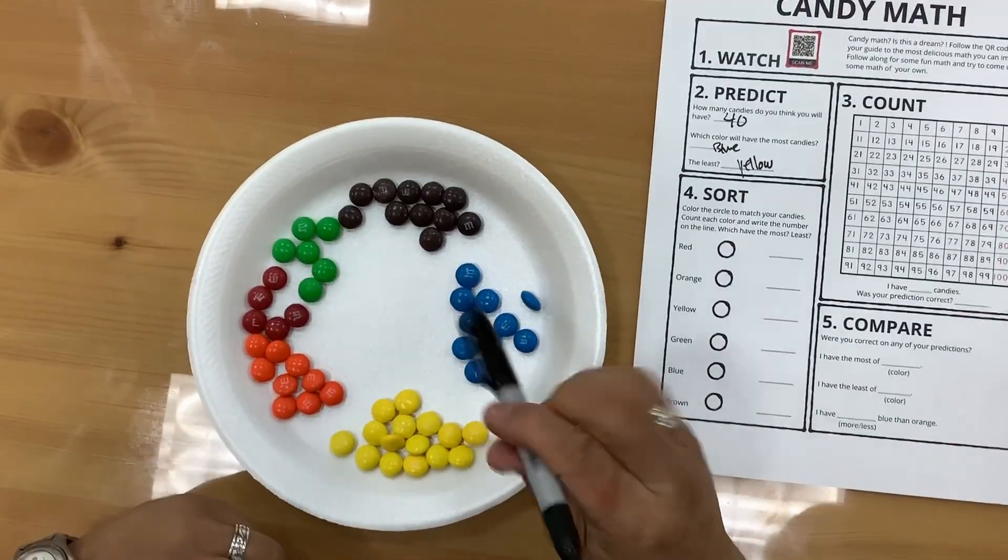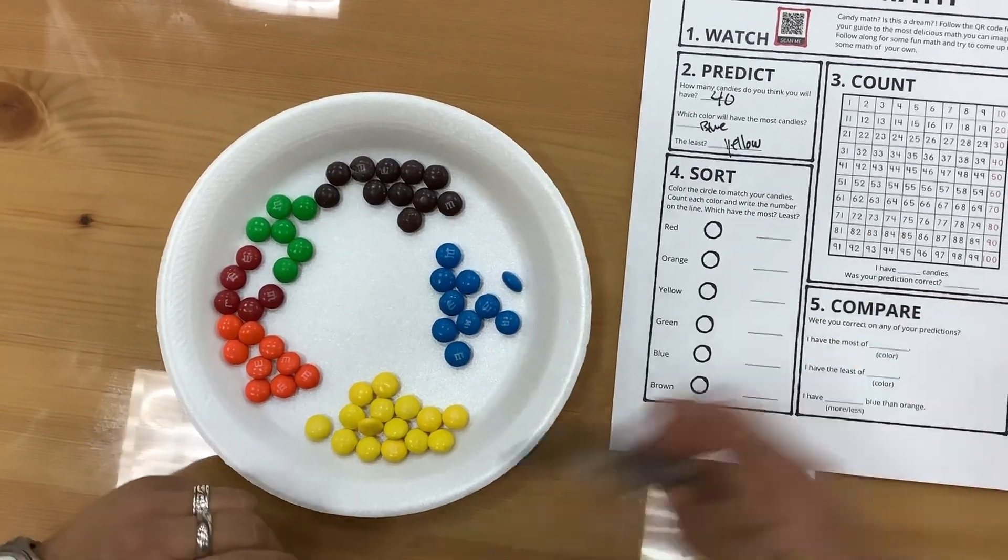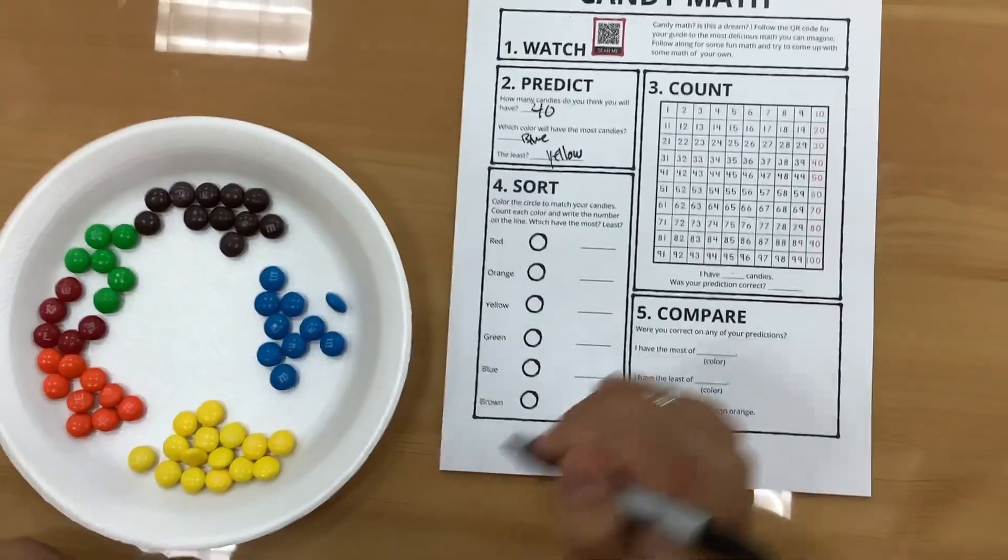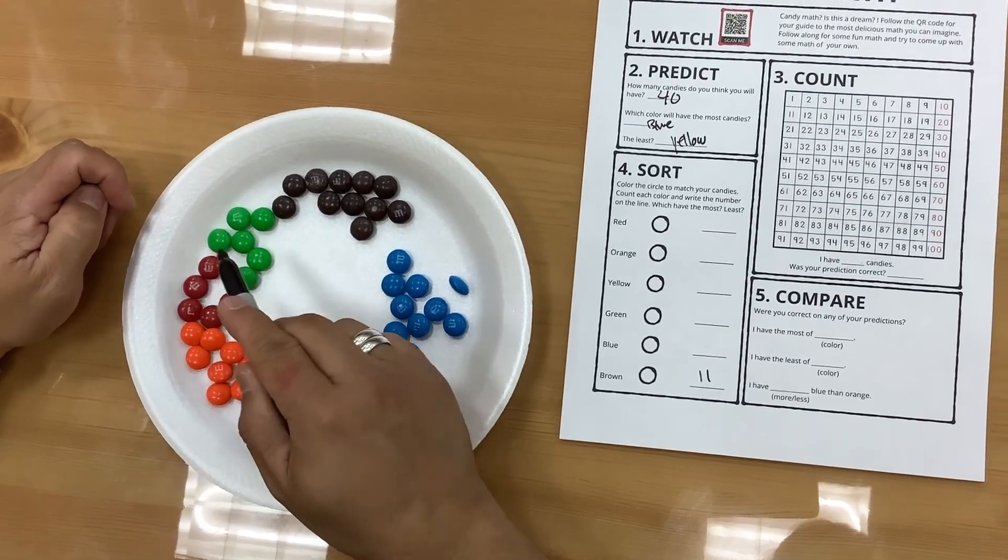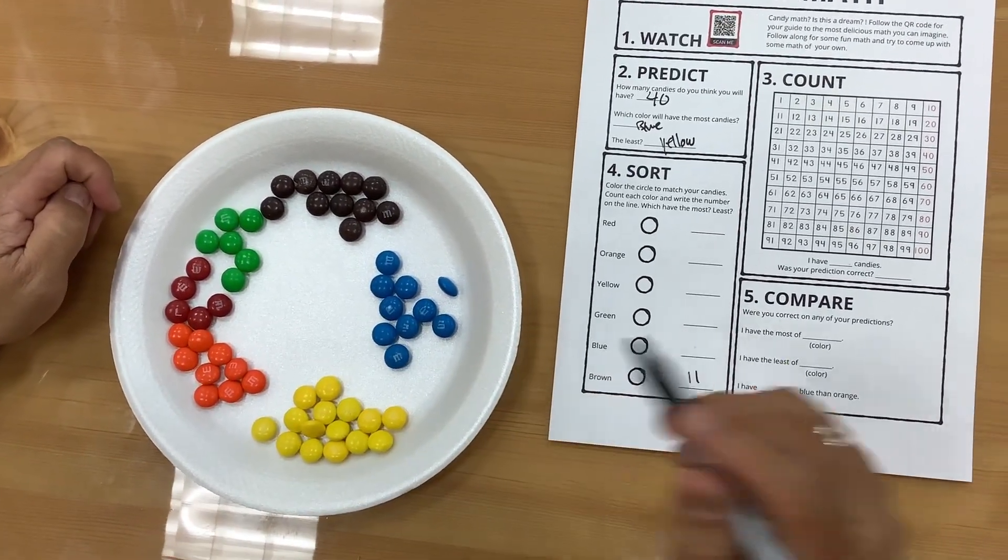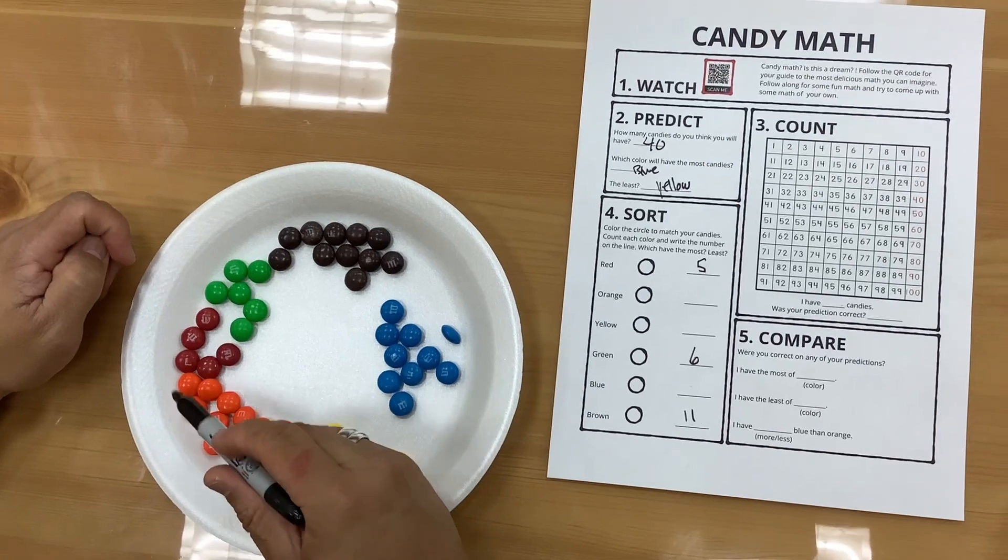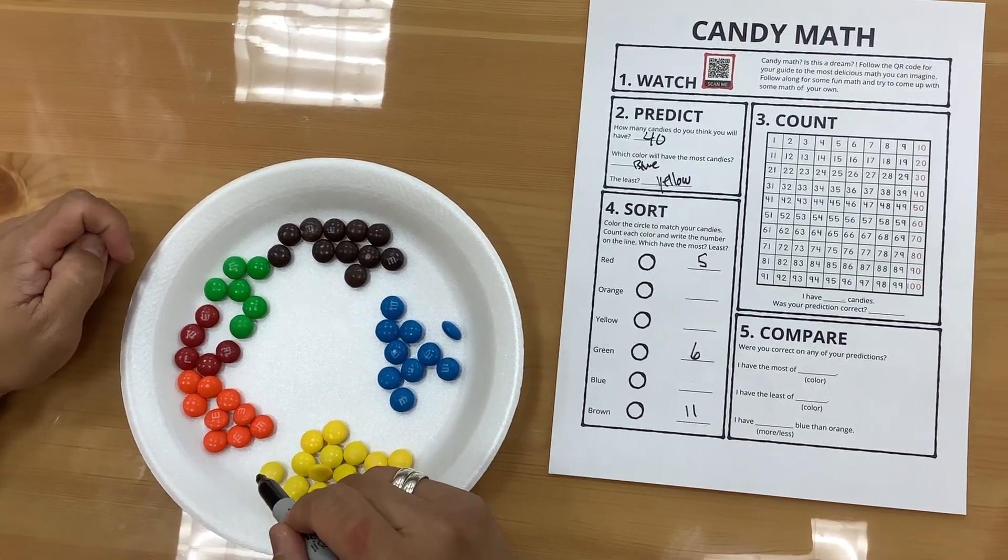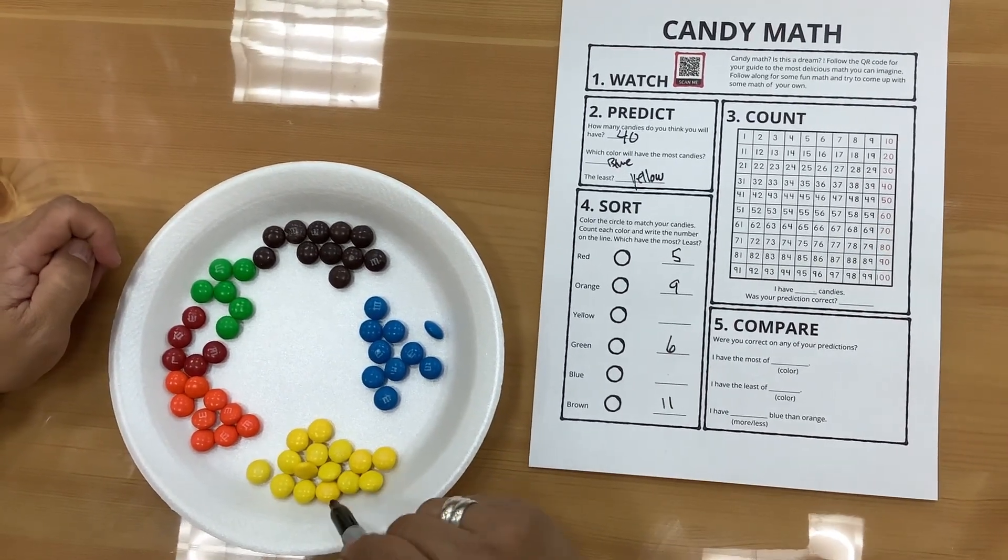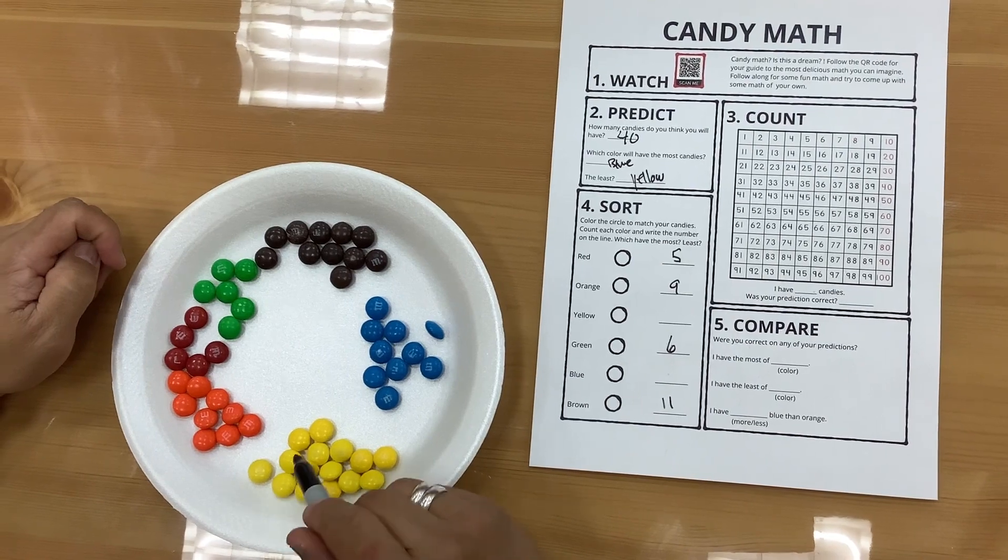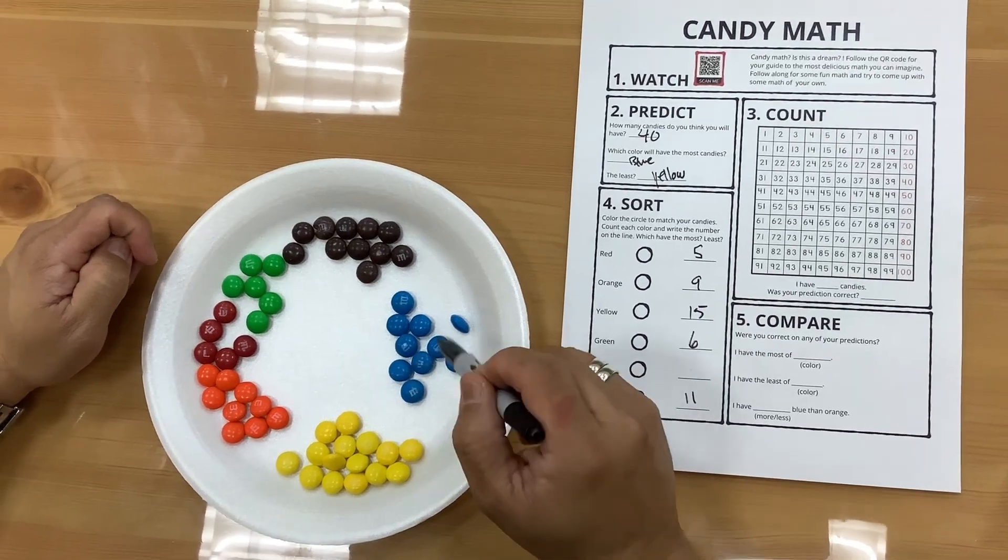Okay. 1, 2, 3, 4, 5, 6, 7, 8, 9, 10, 11. Okay. So I have 11 brown. 1, 2, 3, 4, 5, 6, 7, 8, 9, 10, 11, 12, 13, 14, 15 yellows. 1, 2, 3, 4, 5, 6, 7, 8, 9, 10 blues.